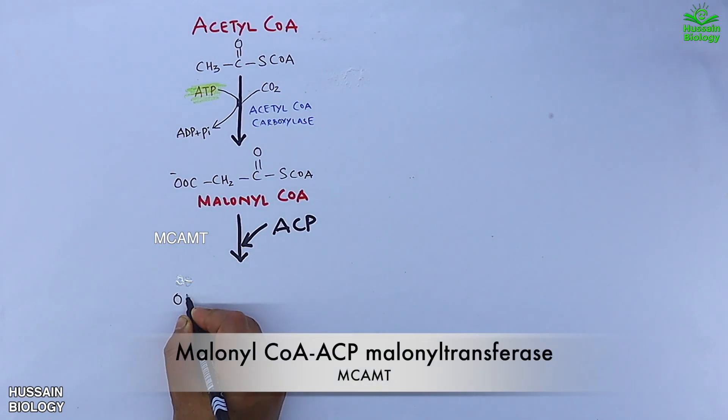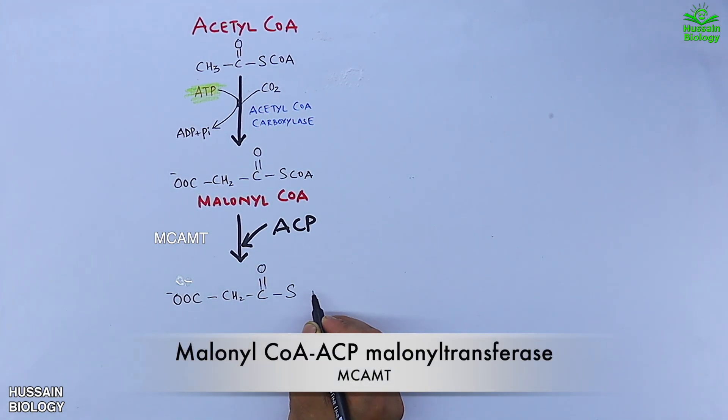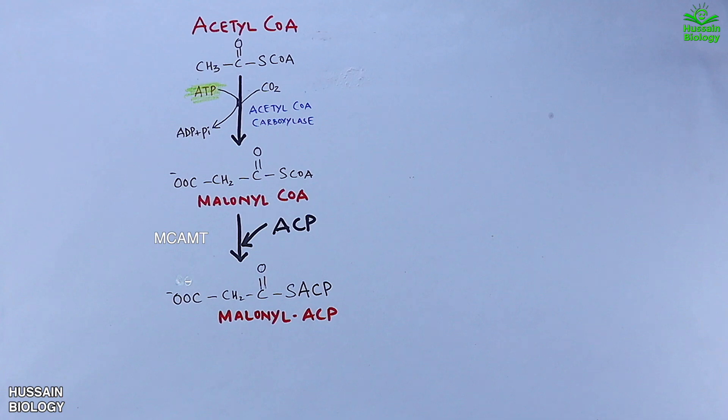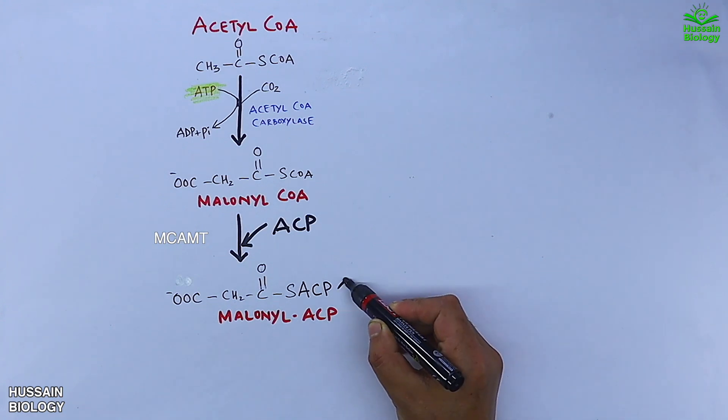The MCAMT enzyme converts malonyl CoA into malonyl ACP. We see the ACP is incorporated, with the MCAMT enzyme transferring the malonyl group to the acetyl carrier protein, and we get malonyl ACP.